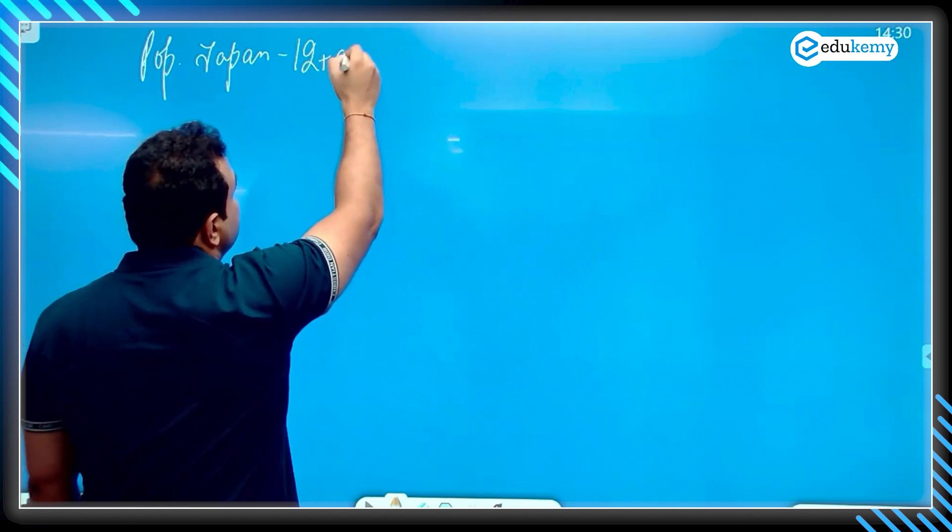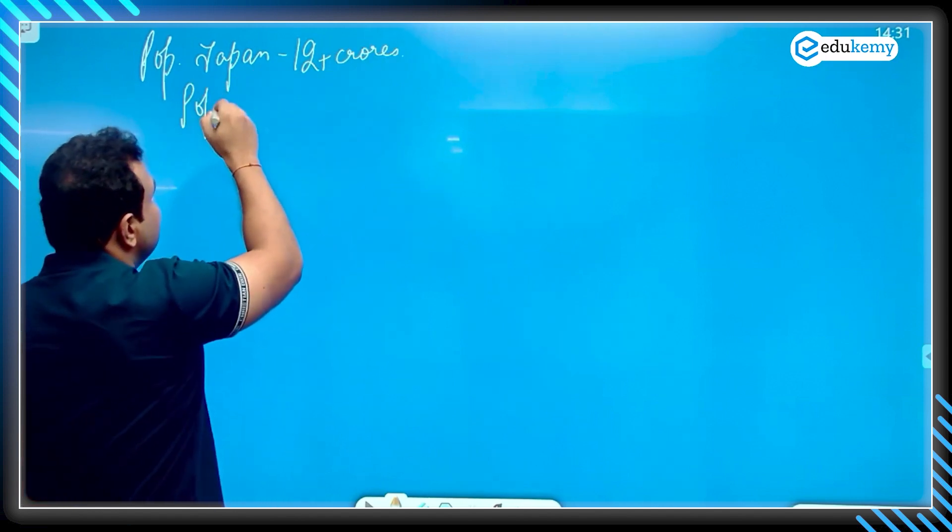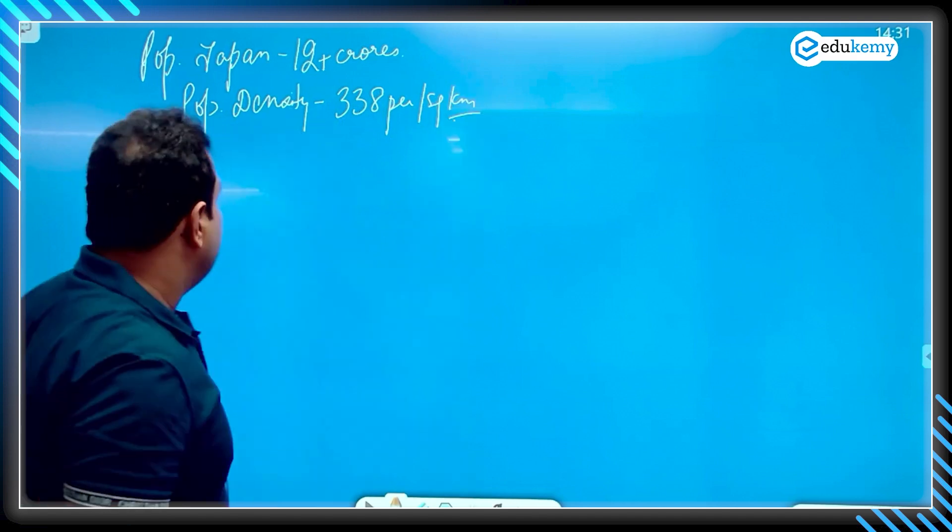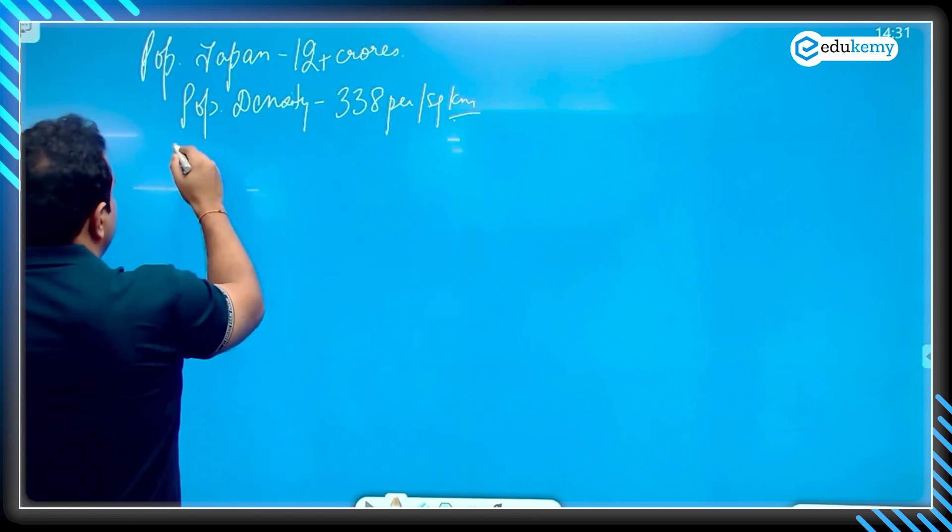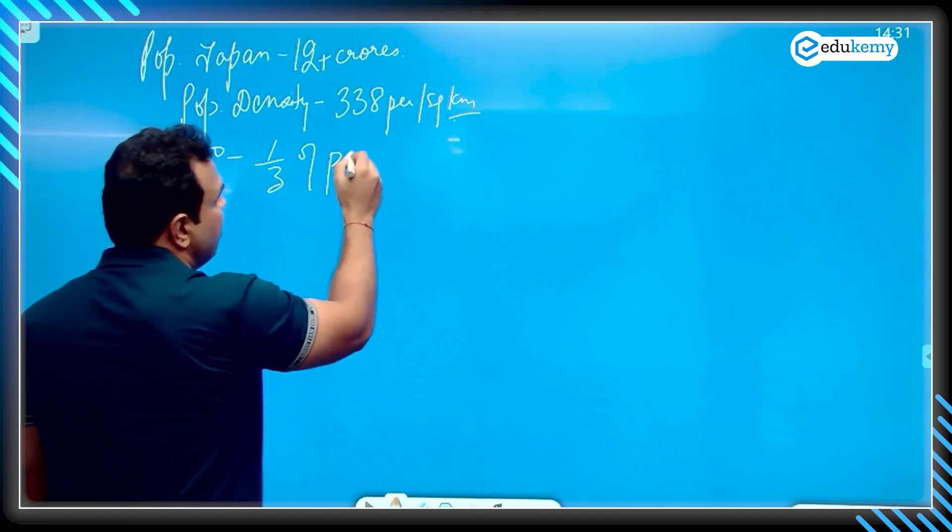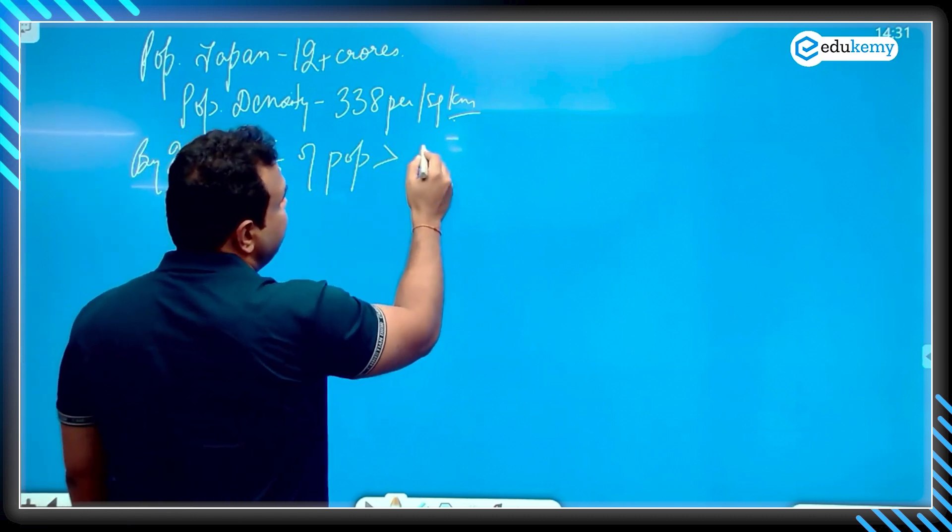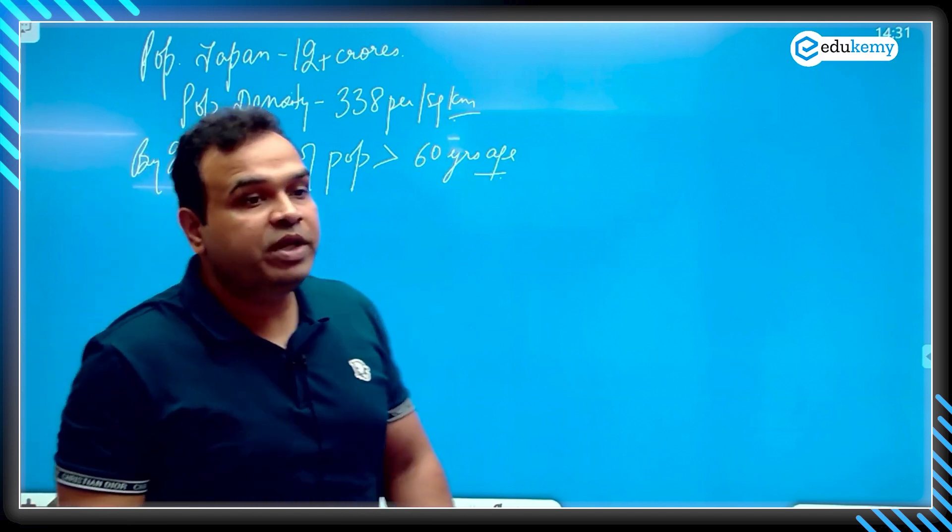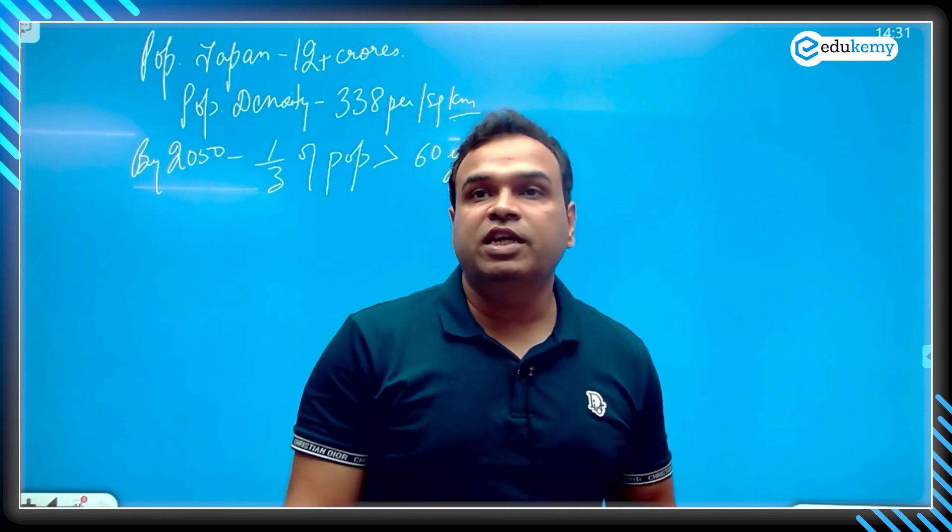Japan's population is 12 plus crores, population density 338 per square kilometer. According to data, by 2050 one third of population would be greater than 60 years of age. 33% of population would be more than 60 years of age.